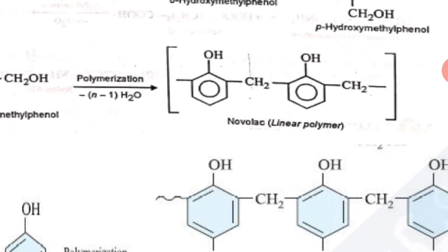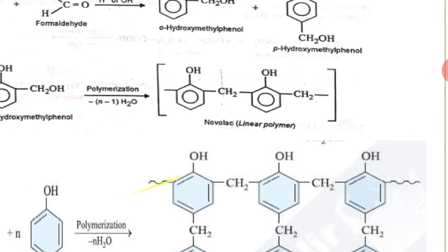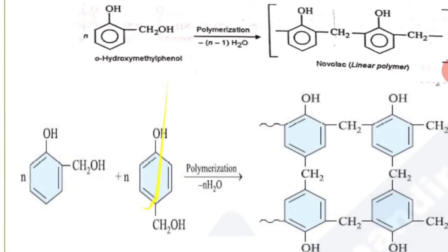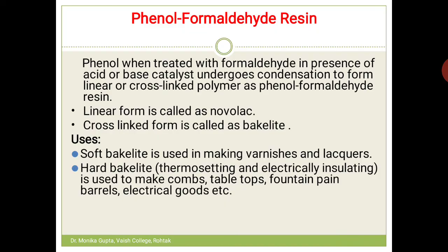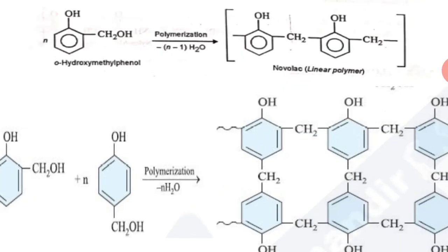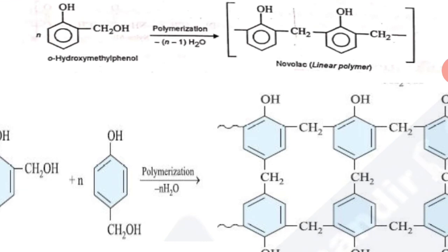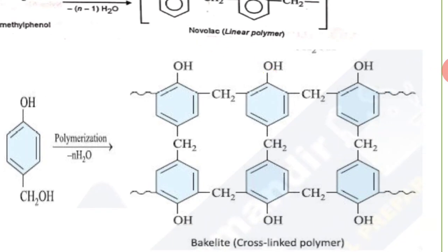If you combine N units at both the ortho and para positions, the polymer formed is highly branched — a cross-linked, three-dimensional, highly branched polymer — which is Bakelite.